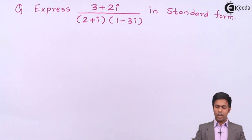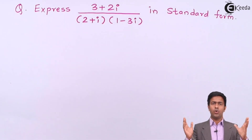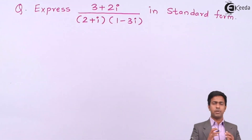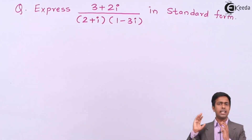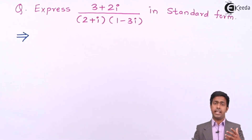Welcome back to complex numbers. Now we are going to solve a numerical based on the standard form of a complex number. In the previous video we saw how to convert any given number into standard form. We will continue with that concept. The standard form for a complex number is x plus iy — a single real part and single imaginary part. Let this given number equal x plus iy.